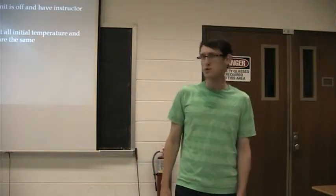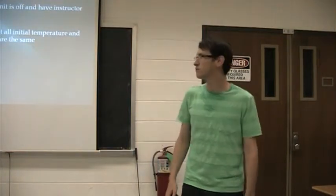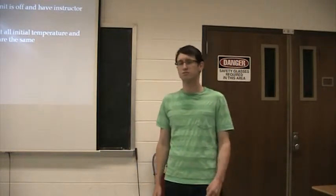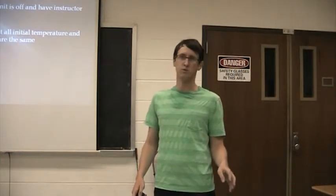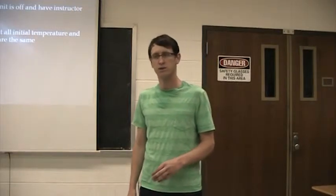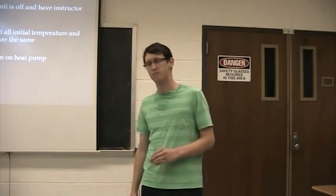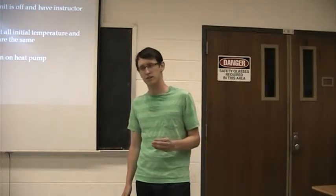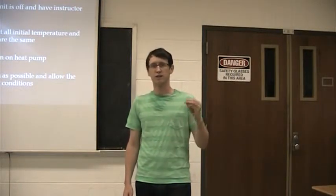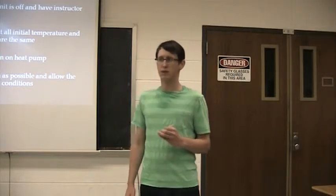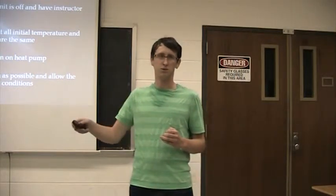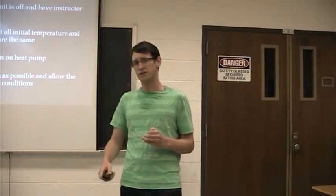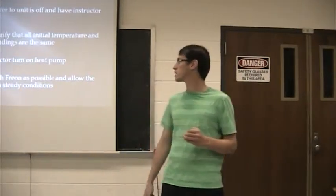So procedure. To start off, we want to make sure the AC is off. I'm going to check to verify that the initial temperature and pressure readings are all the same for all four. If they're not, we're going to have to do a little bit of calibration, but they should be the same. All right, then we're going to have the instructor turn on the AC. And then we're going to add as much freon on the system as possible by opening up the low-pressure side of the valve and just getting as much freon on the system as possible.